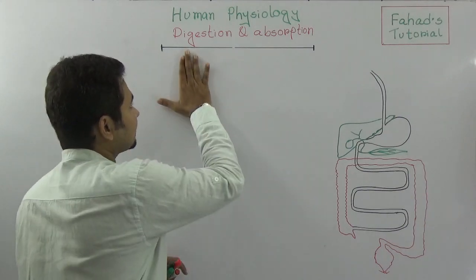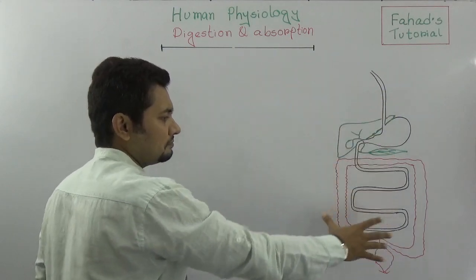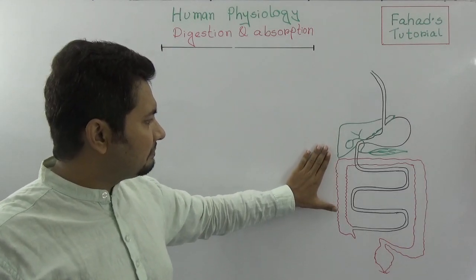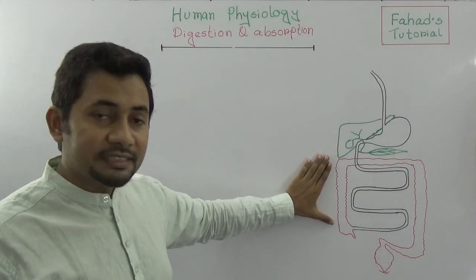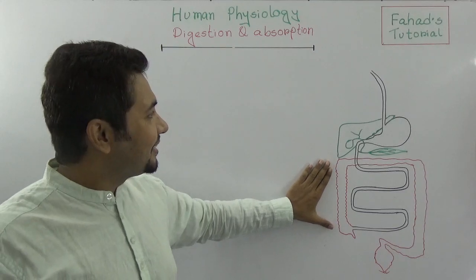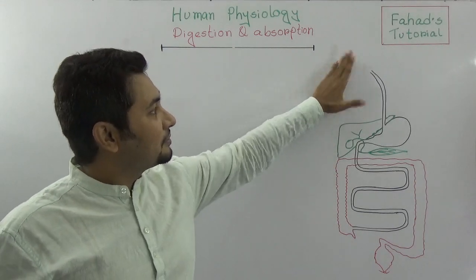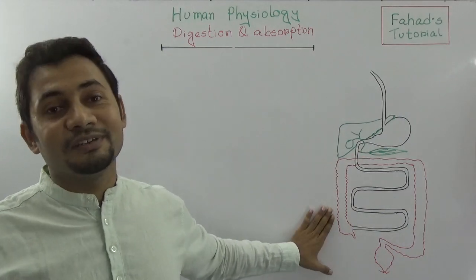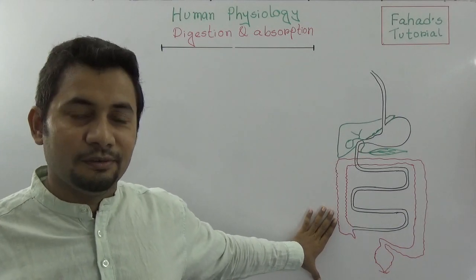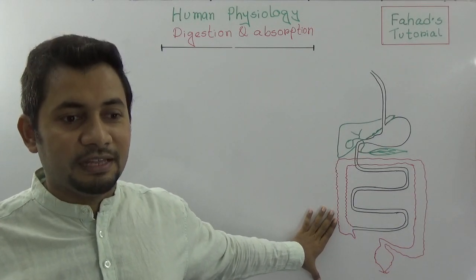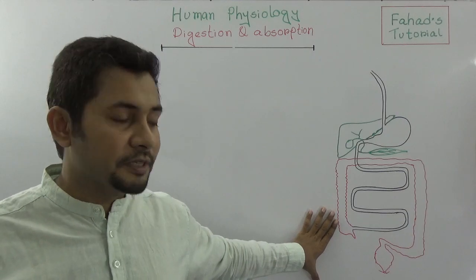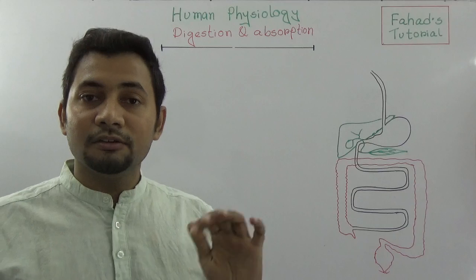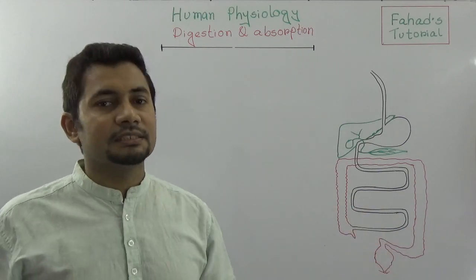Before we begin, you probably know this simple-looking digestive system in our body that starts from the mouth to the anus. The whole line is called the alimentary canal or digestive tube. Before explaining all of this, we need to know what food is and what nutrition is.